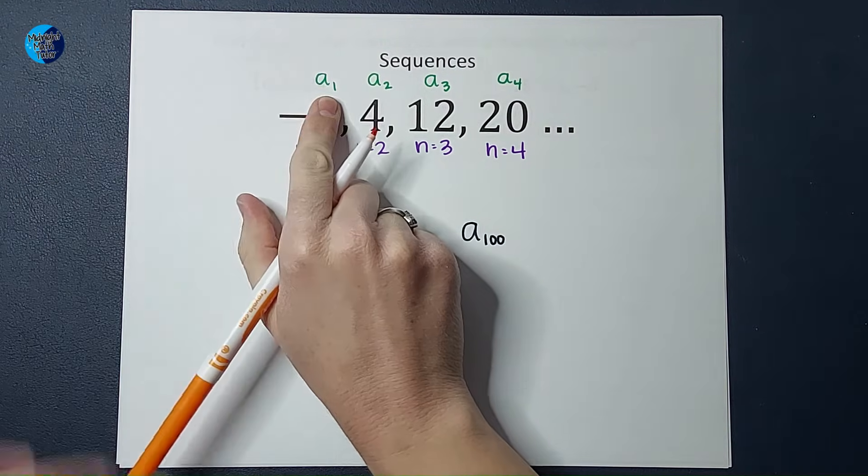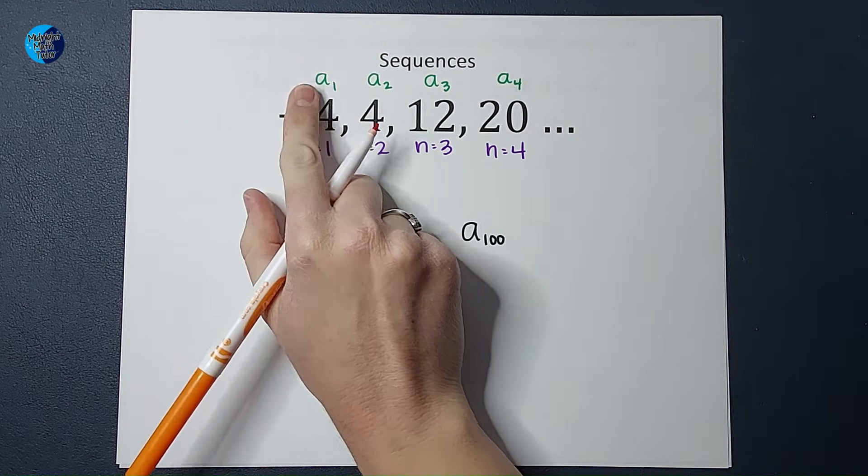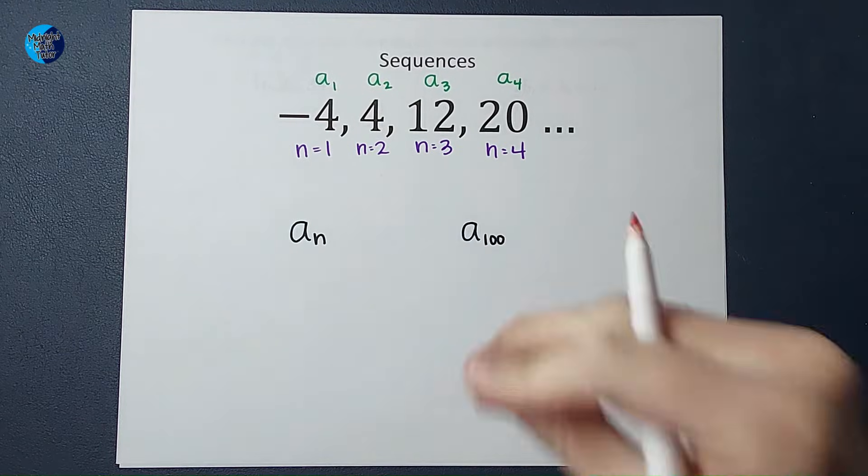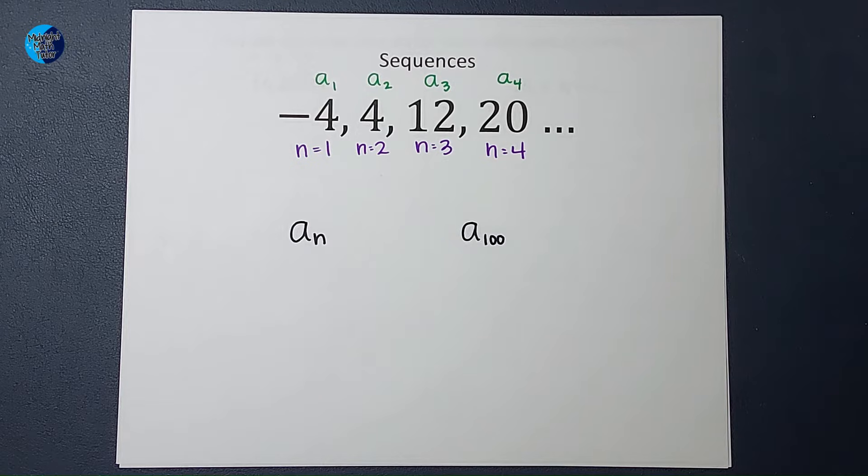When you see A with a little number like this, a little subscript, a sub one, that's talking about the value of that number. So a sub one in this case is negative four.